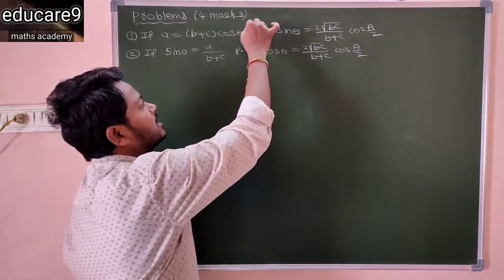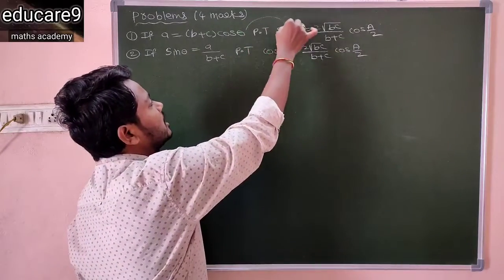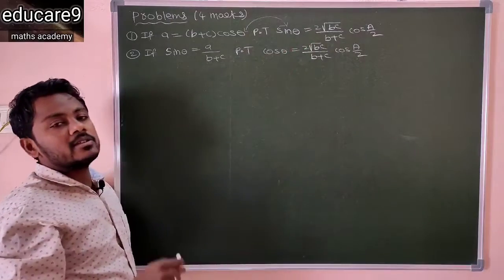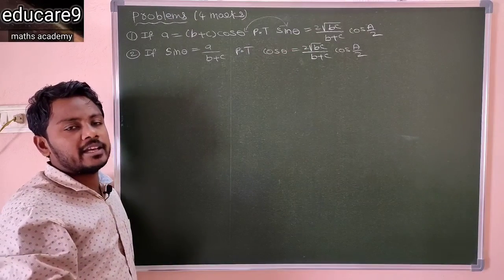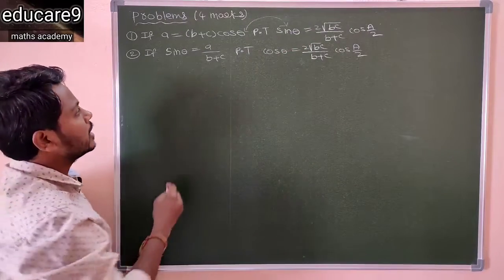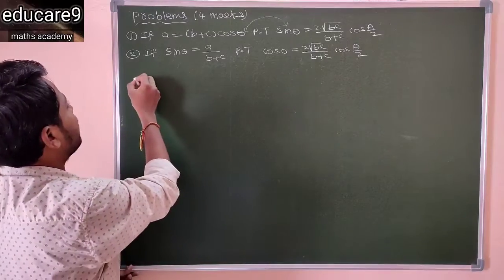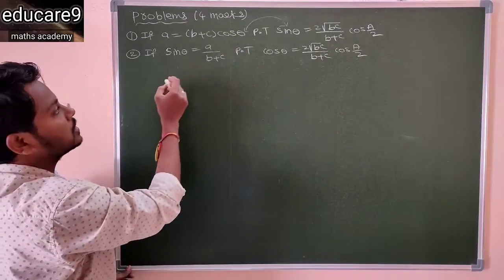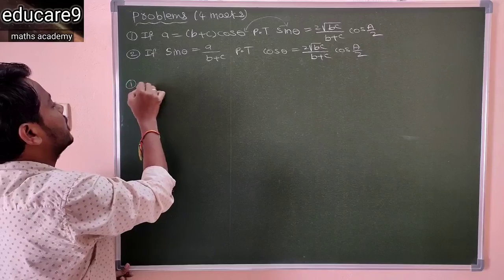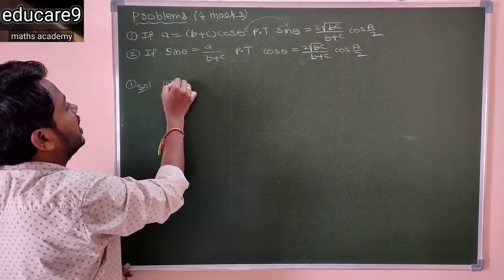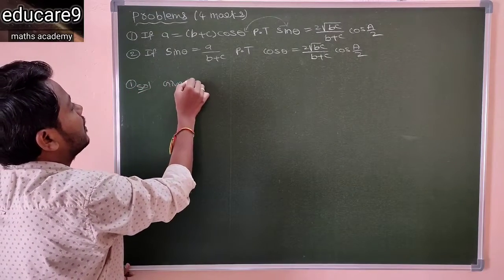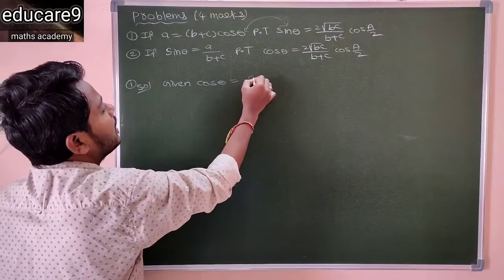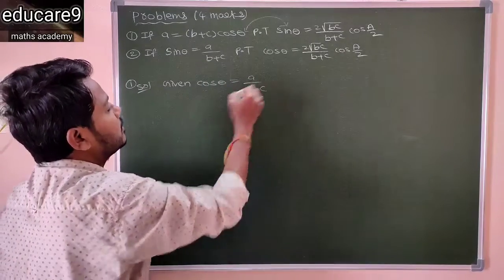You know that what is the relation between cos and sin? That is cos²θ plus sin²θ equals 1. So using that identity, you can find the value of sin θ from cos θ. So given cos θ equals a/(b+c).